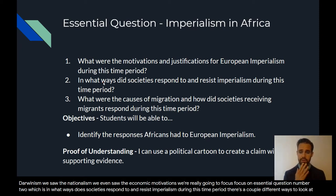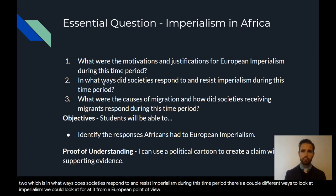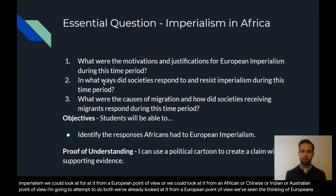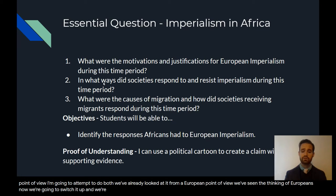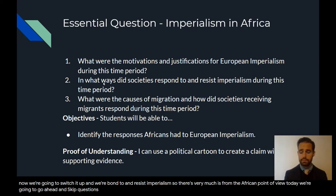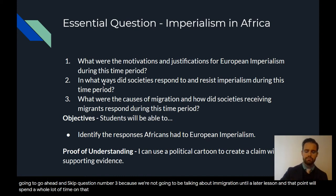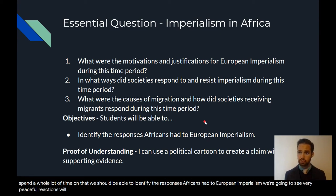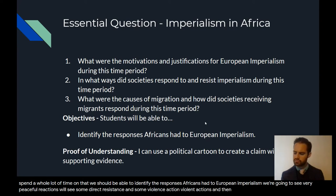There are a couple of different ways to look at imperialism — from a European point of view, or from an African, Chinese, Indian, or Australian point of view. I'm going to attempt to do both. We've already looked at it from a European point of view. Now we're going to switch it up and look at how Africans respond to and resist imperialism. We'll see very peaceful reactions, some direct resistance and violent actions, and some religious reactions as well.